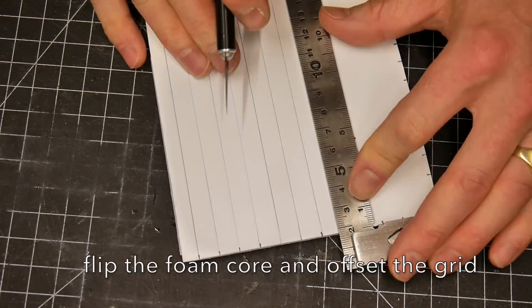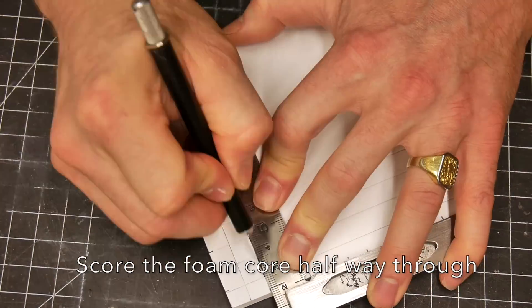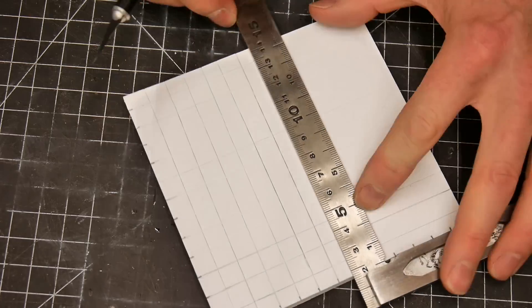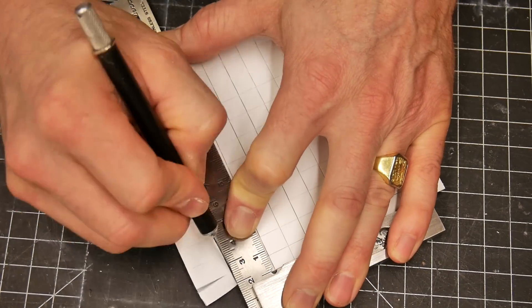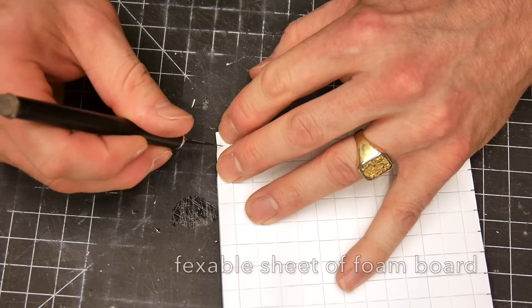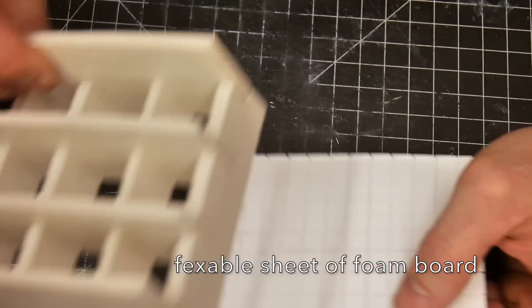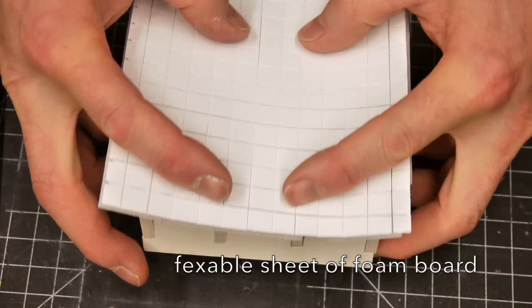So we're gonna lay out a one centimeter grid and score about halfway through the foam core on the first side of the foam board. We're gonna flip the piece over and we're gonna do the exact same thing on the other side but we're gonna offset that grid by five millimeters. That's going to give us this beautiful flexible surface that's going to give us our organic compound surface capability.